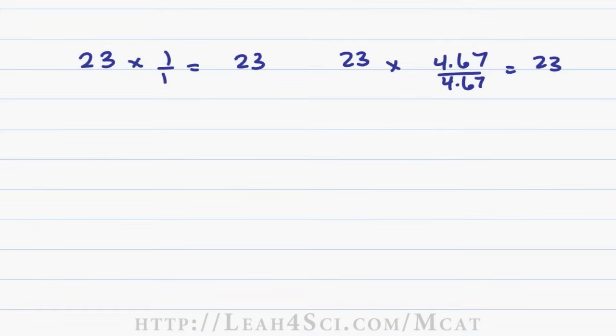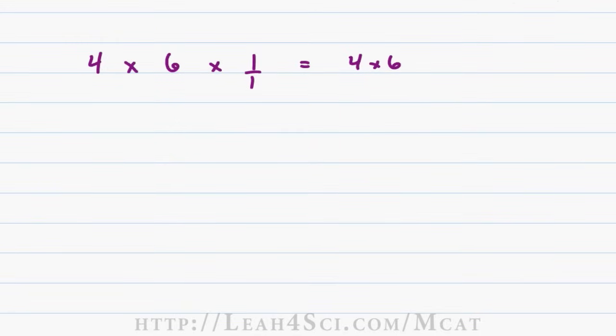So let's take this one step further. If I have the equation 4 times 6 times 1 over 1, the answer is just 4 times 6. We're not actually solving that, I just want to show you that the identity doesn't change. Now if I take 4 times 6 and I multiply it by 10 over 10, it's still just 4 times 6.